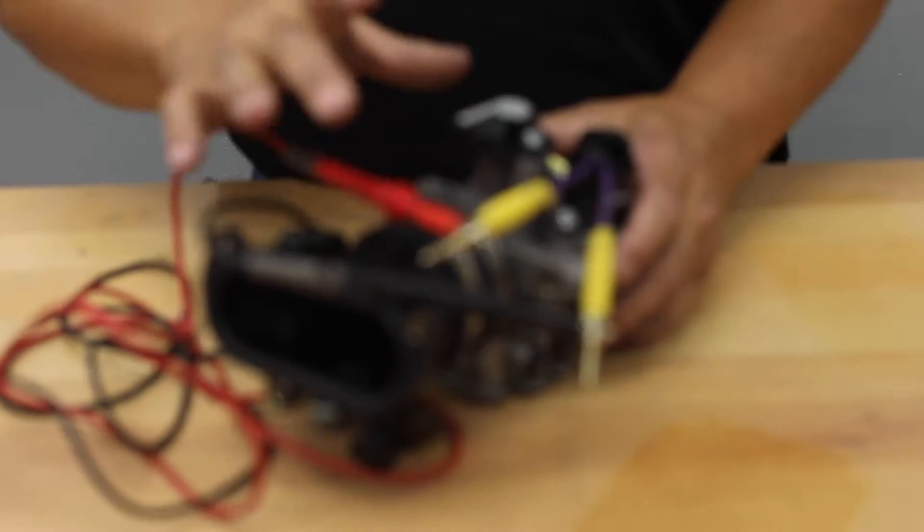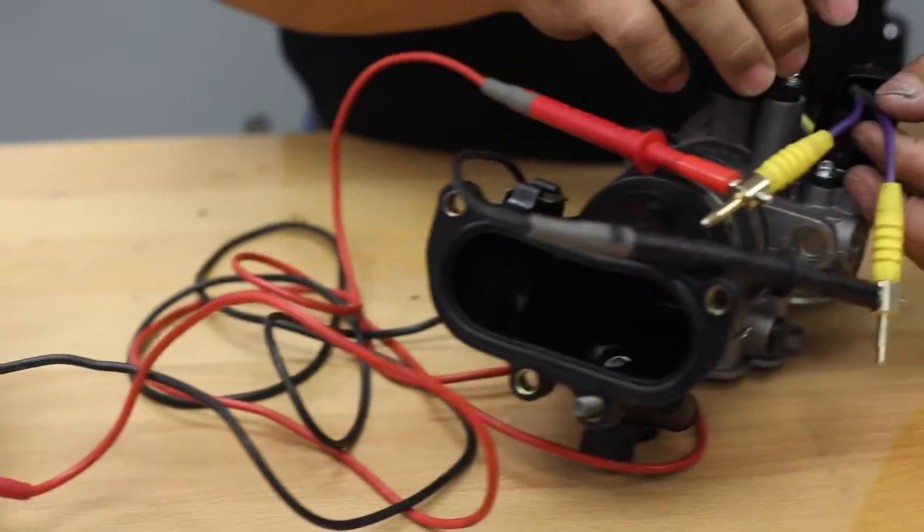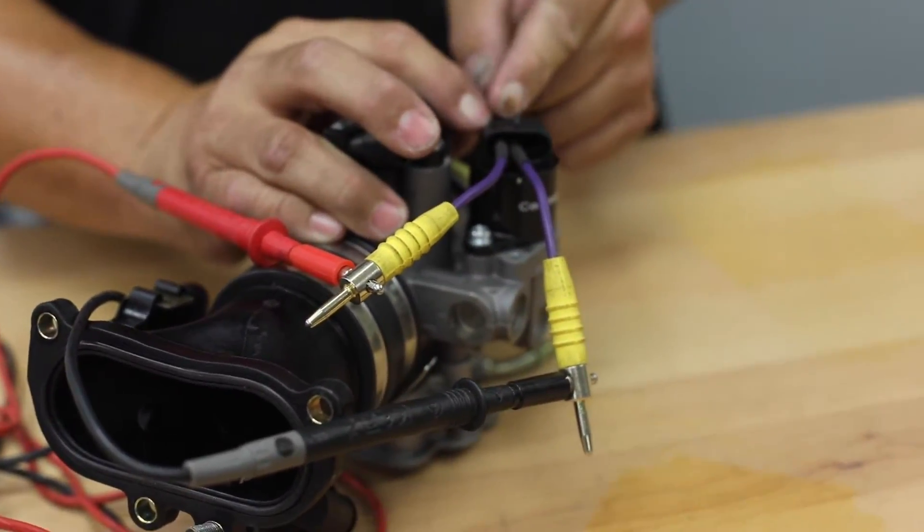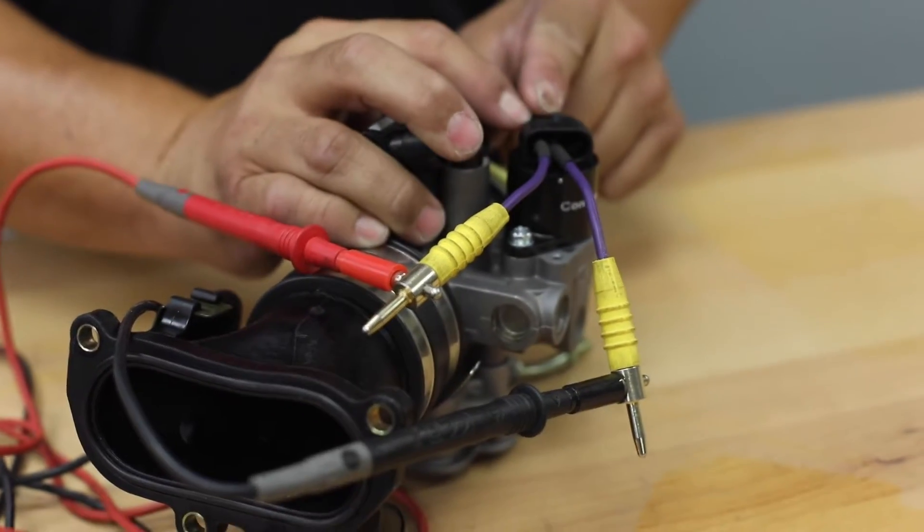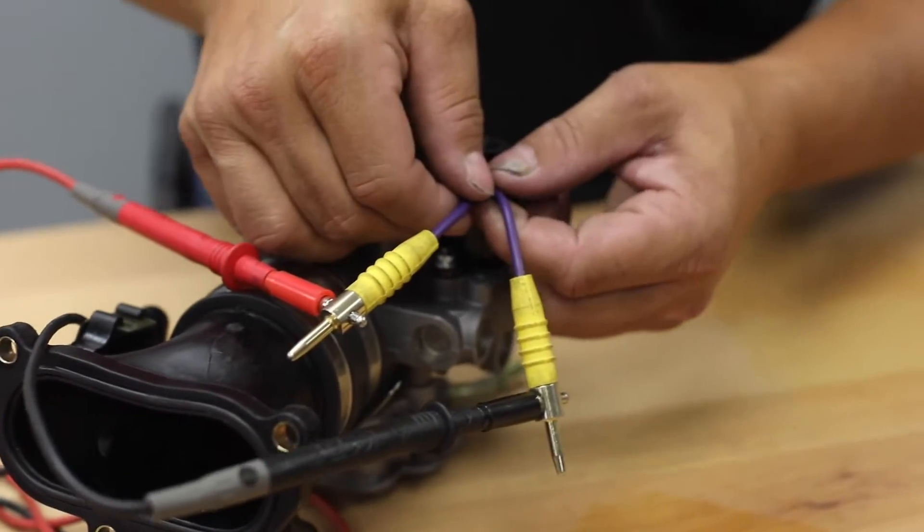To test this, we're going to get into it. Set your voltmeter on ohms. You're going to put one lead on pin number two, one lead on pin number one. You should get 48 ohms. As long as you've got 48 ohms, that coil's good.